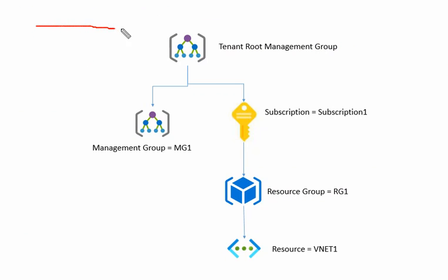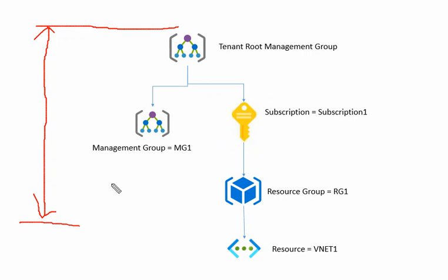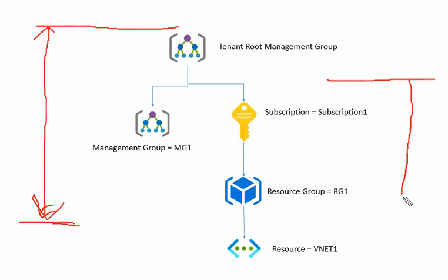So on the diagram we can see: our policy scope can start from the tenant root management group, to any management group, any subscription, and up to the resource group. That is the selection range for scope when defining a policy. At the same time, if we would like to exclude something, we can exclude the management group, the subscription, the resource group, and the resource.